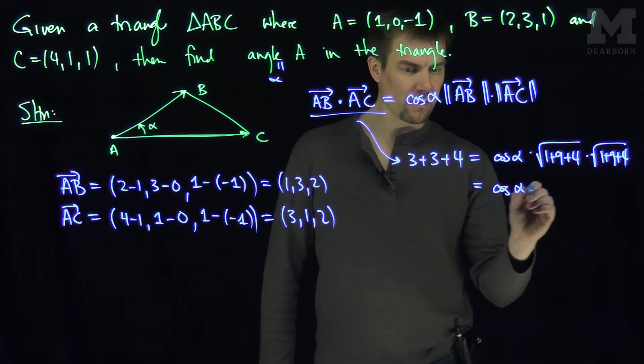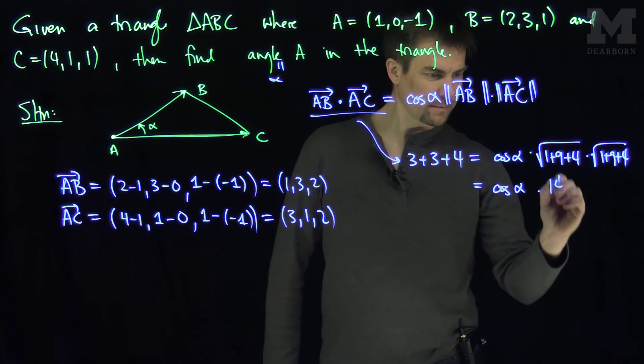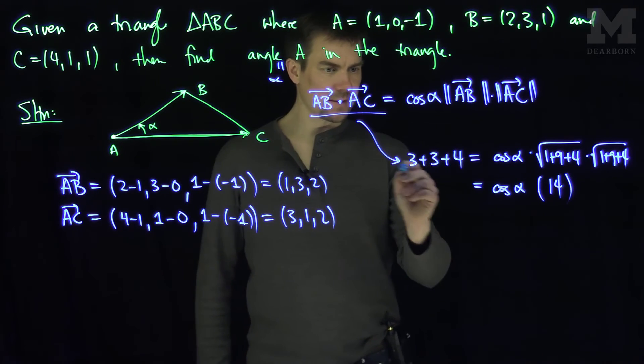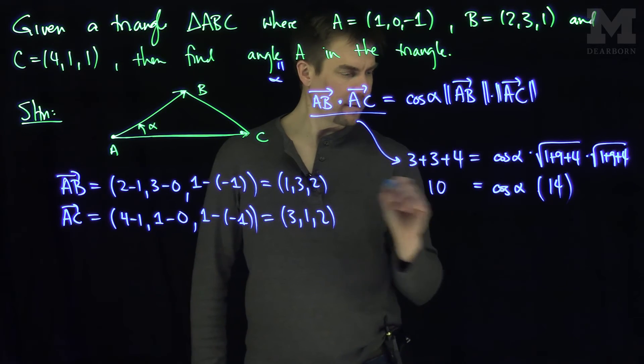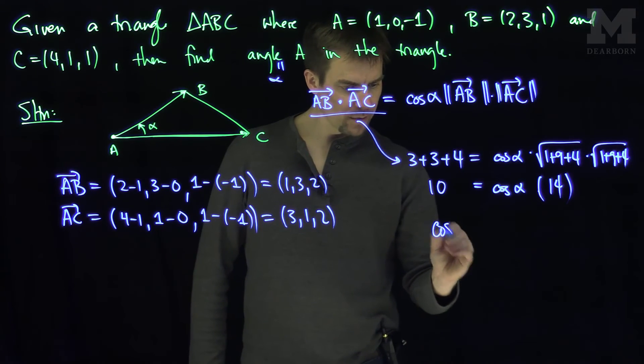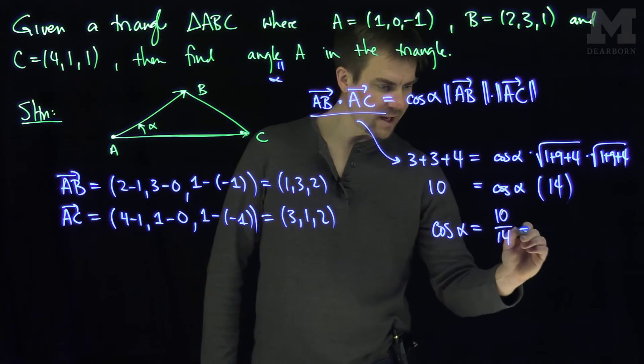So this is going to be the cosine of alpha times 14. And this over here on the right hand side is going to be 6 plus 4, that's going to be 10. So our conclusion is that the cosine of alpha is equal to 10 over 14.